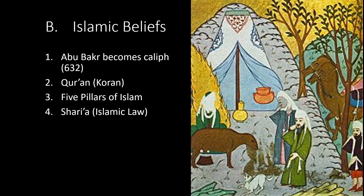Beliefs: Abu Bakr ordered all the words of Muhammad to be written down and gathered in books that would become the Quran, which consists of 114 chapters arranged according to length, not subject. It was written in Arabic, which became the language of Islam and followed everywhere that Muslims conquered. There are five pillars of Islam: first, there is no god but God and Muhammad is his prophet; prayer five times a day; alms; fasting during Ramadan; and a pilgrimage to Mecca for those who can afford it. Sharia is Islamic law, which forbids eating pork, gambling, drinking alcoholic beverages, and engaging in dishonorable behavior.